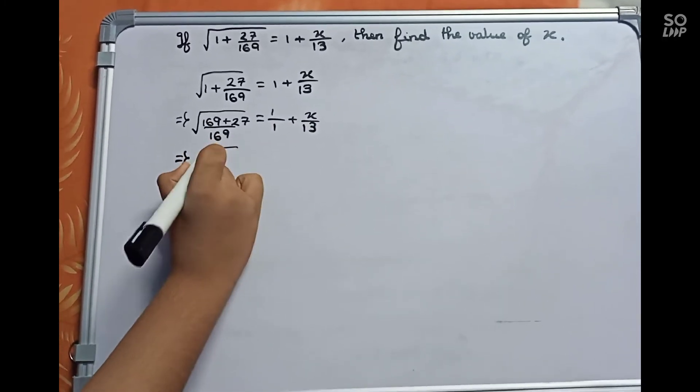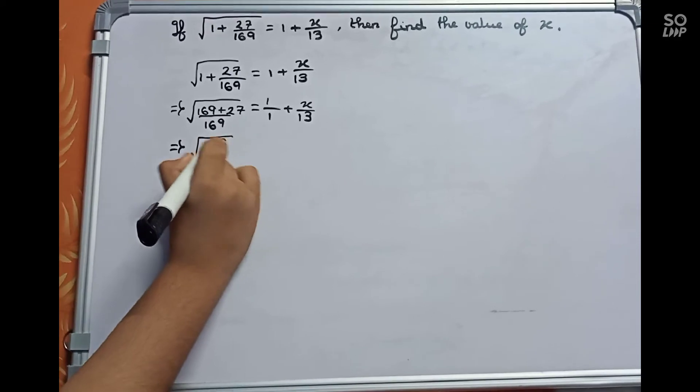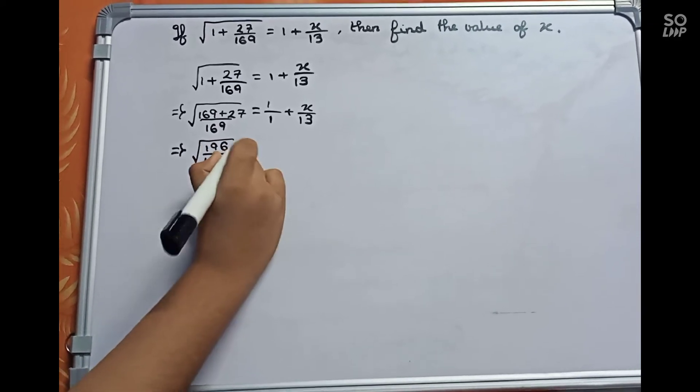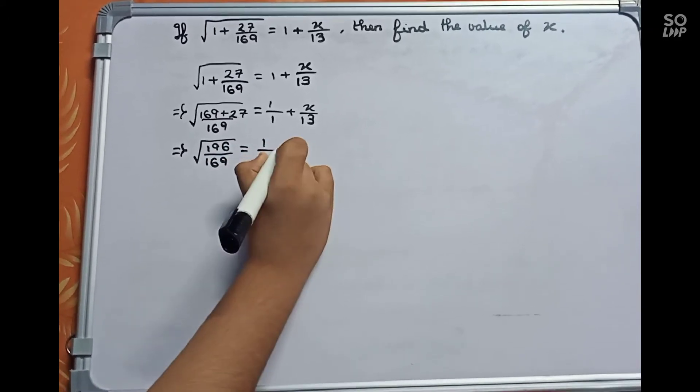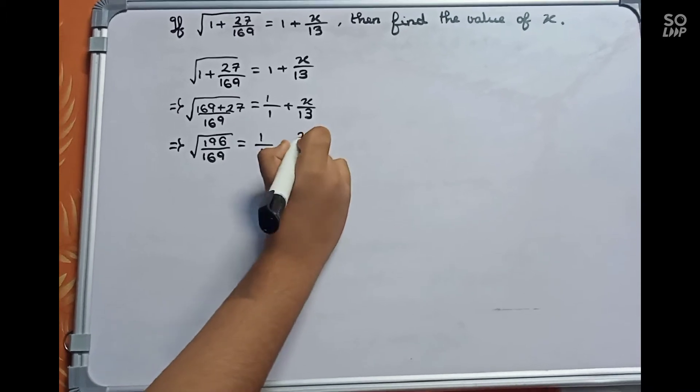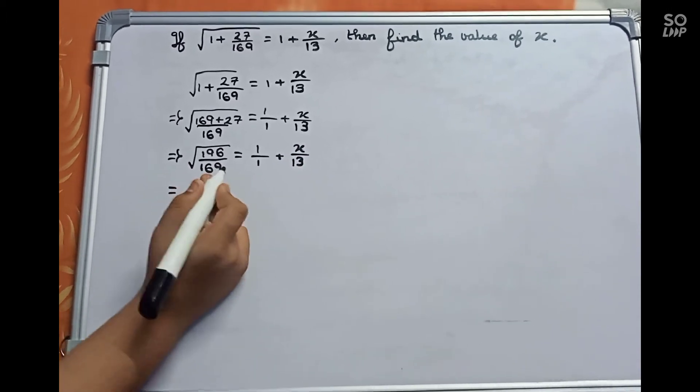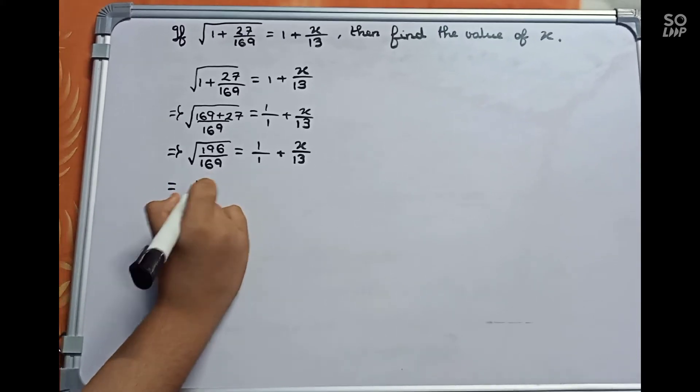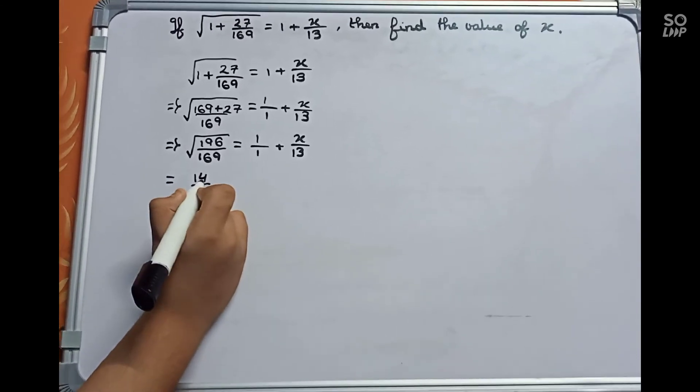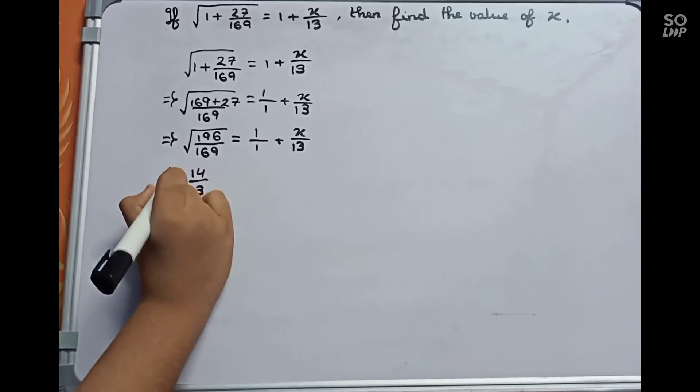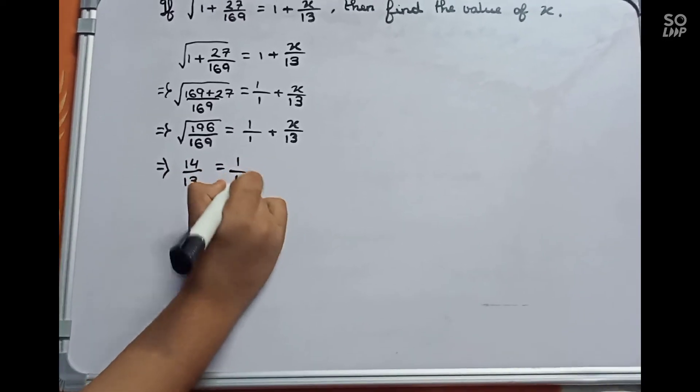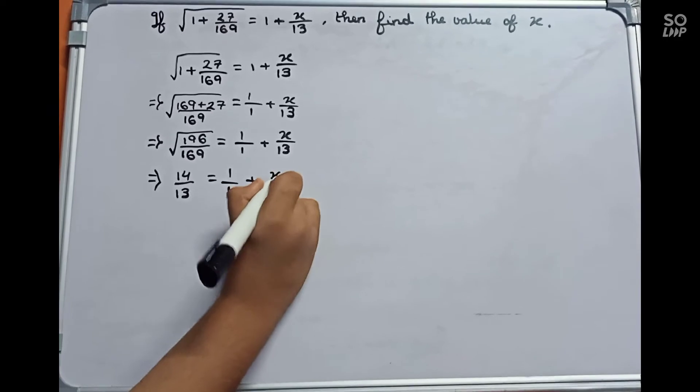It becomes square root of 196 by 169 equals to 1 plus x by 13. Now you will simplify it. It will become 14 by 13 after finding the square root equals to 1 plus x by 13.